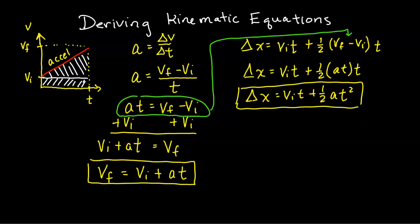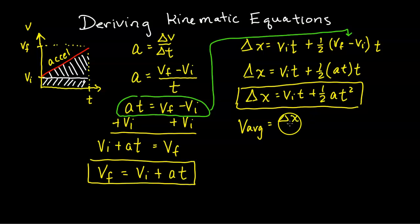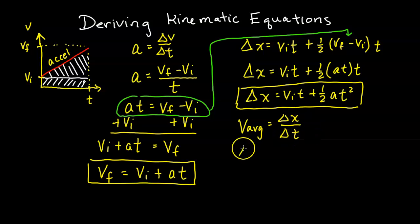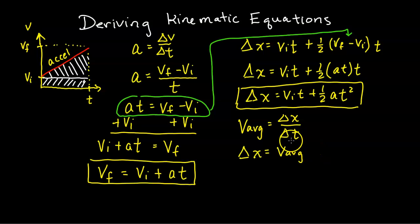For the third kinematic equation, we recall that average velocity equals change in position (displacement) divided by change in time. Solving for delta x gives delta x equals average velocity times time, and since the initial time is zero, the change in time is just t.